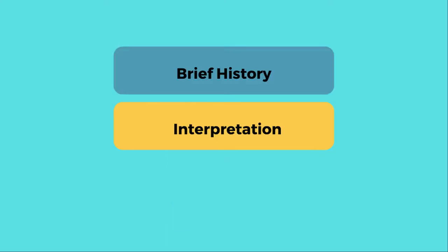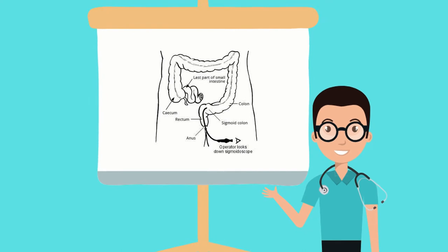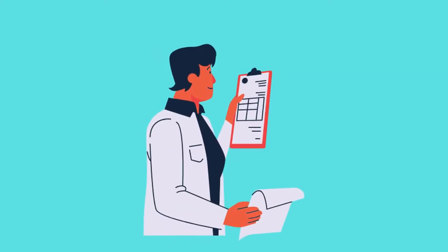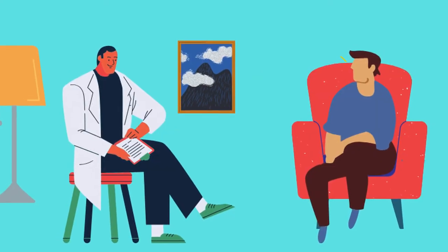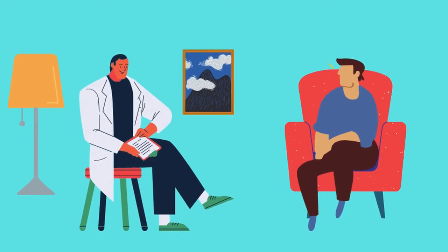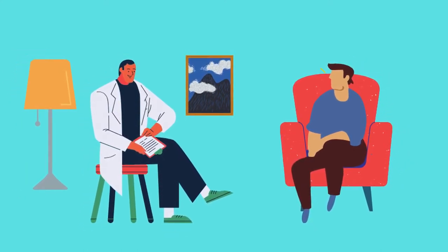The second stage is reviewing the results of the investigation in context with the information you have gathered. Use analogy or diagram to facilitate the patient's understanding. Lastly, the third stage is explaining to the patient about the implications of the results, diagnosis, and risks versus benefits of a procedure. Give opportunities for questions from the patient, check understanding, use the patient's ideas, concerns, and expectations to tie in your management, and make a follow-up plan.